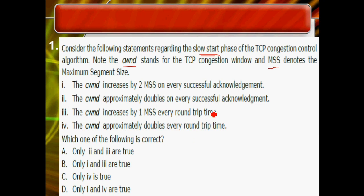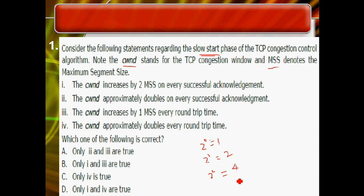Initially the congestion window size is 2 to the power 0, which equals 1, so one packet is sent. Next it becomes 2 to the power 1, which is 2. Then 2 to the power 2, which is 4. Then 2 to the power 3, which is 8, and 2 to the power 4 is 16, and 2 to the power 5 is 32. So the window size increases exponentially.